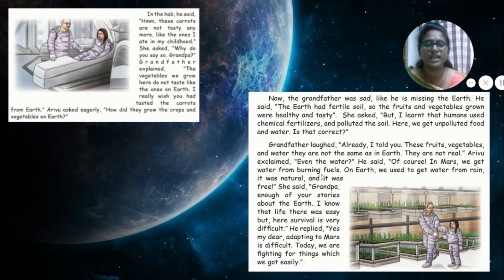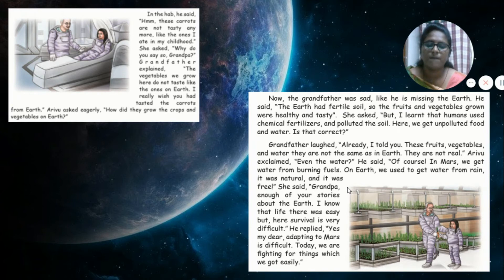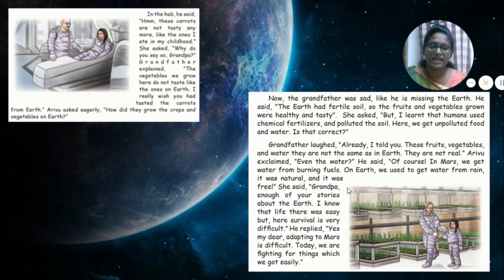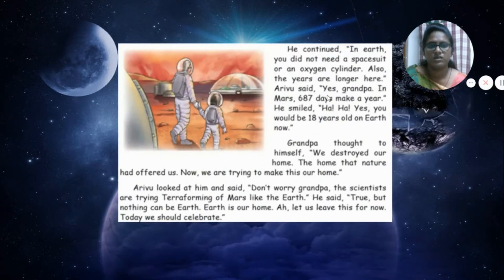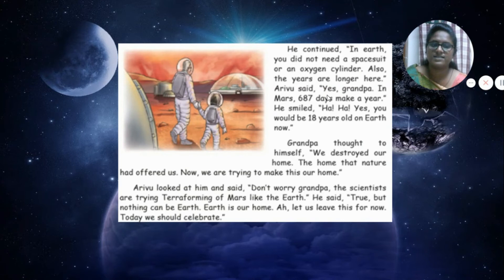On Earth we used to get water from rain. It was so natural and it was free. She said, 'Grandpa, enough of your stories about the Earth. I know that life there was easy, but here survival is very difficult.' He replied, 'Yes, my dear, adapting to Mars is difficult. Today we are fighting for things that we got easily.' He continued, 'On Earth, you do not need a space suit or an oxygen cylinder.'